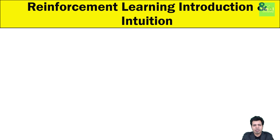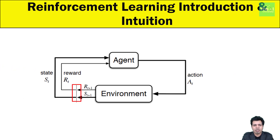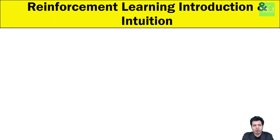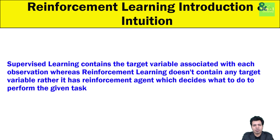So what is reinforcement learning? It's a part of a deep learning method that allows an agent to take actions and interact with an environment so as to maximize the total rewards. Reinforcement learning is different from supervised machine learning in the way that in supervised learning the training data has a target variable associated with each observation, so the model is trained with the correct answer itself. Whereas in reinforcement learning there is no target variable, but a reinforcement agent which decides what to do to perform a given task. In the absence of a training dataset, it is bound to learn from its experience and associated environment.